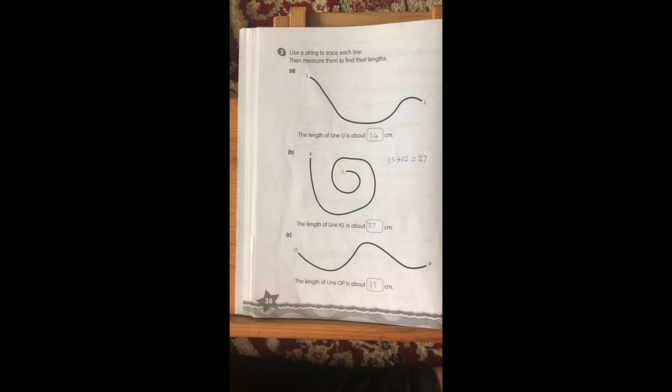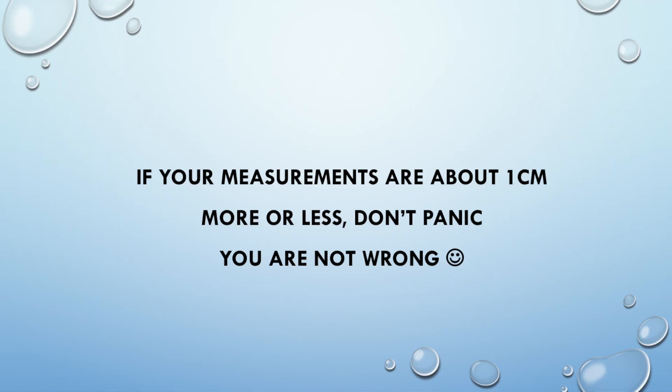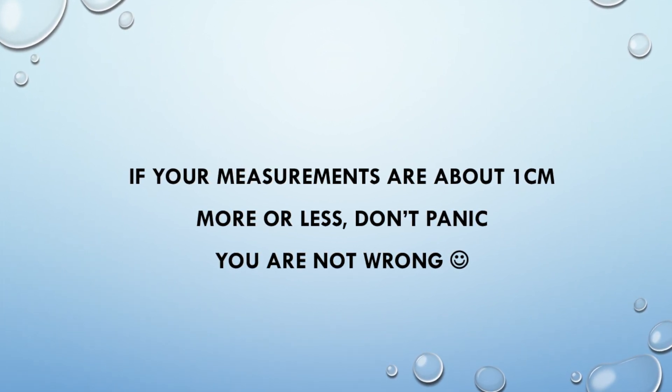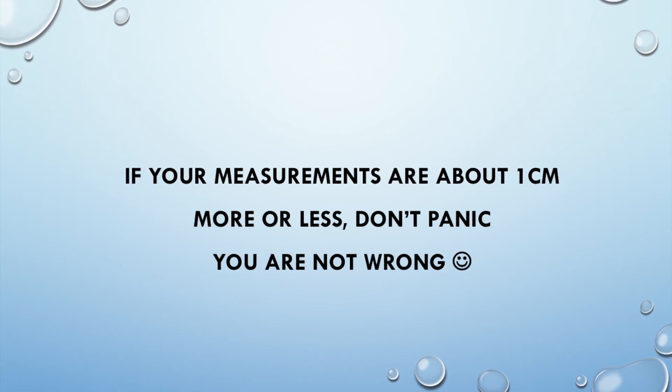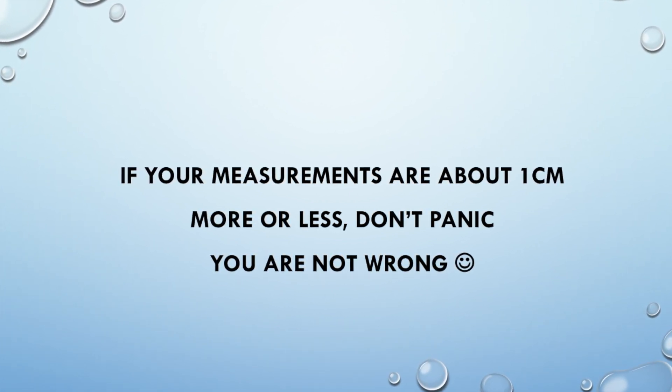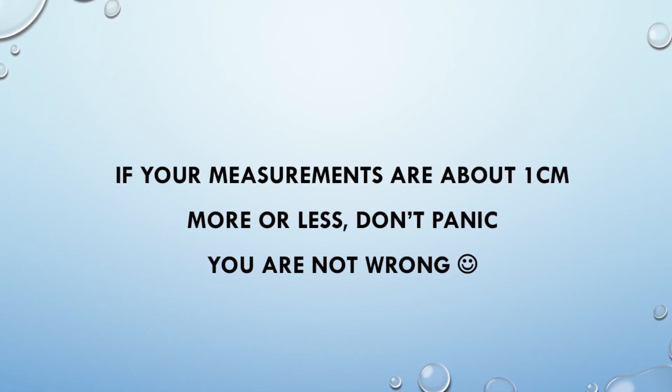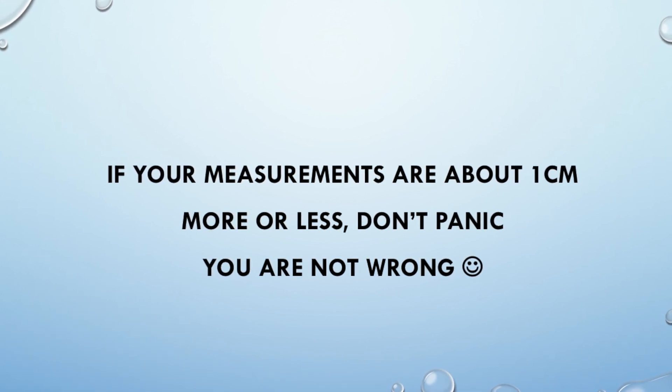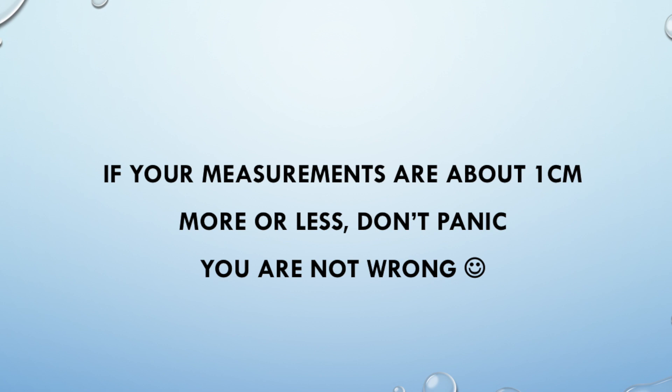Now, you can try this on your own. If you do not have any strings at home, don't worry about it. You can follow my video here, and then we will let you try when you are back in school. Now, if your measurements are about 1 cm more or less, don't worry. Because if you take a look at your workbook, they always say the length of line IJ, for example, is about. So, our measurements can vary from 1 cm. It's okay if you get 14 cm instead of 13 cm or 15 cm instead of 14 cm.